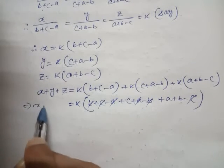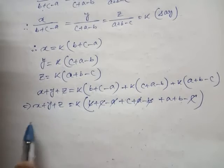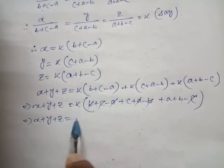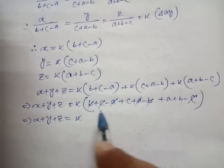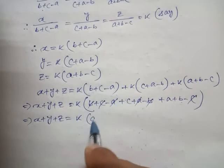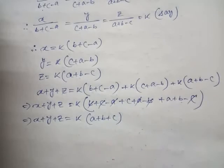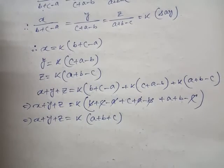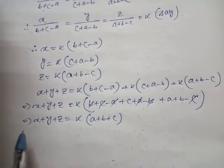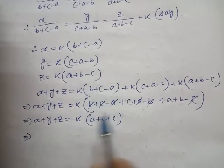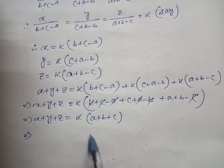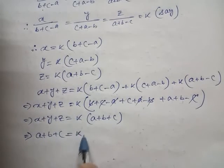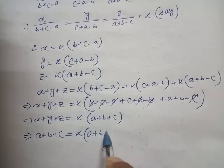So the remaining part gives us x plus y plus z equal to k(a plus b plus c). In the given question, it is mentioned that x plus y plus z equal to a plus b plus c. So here we write: a plus b plus c equal to k into (a plus b plus c).